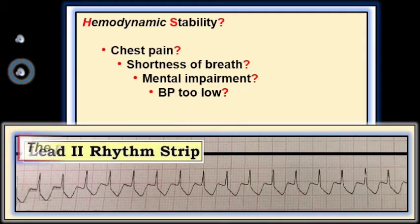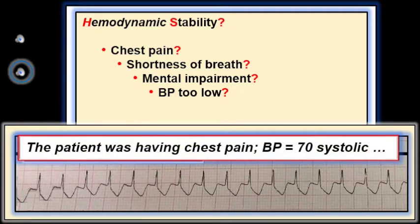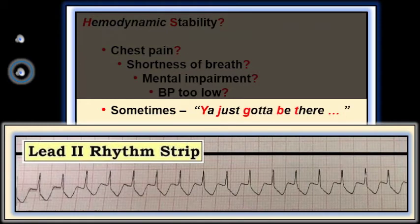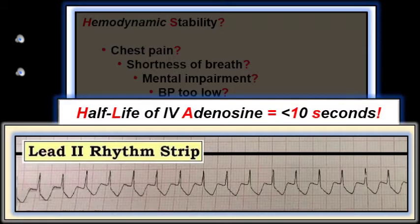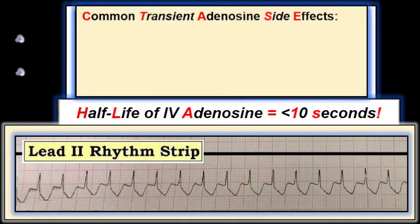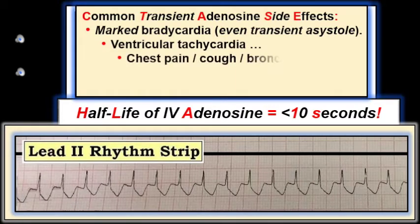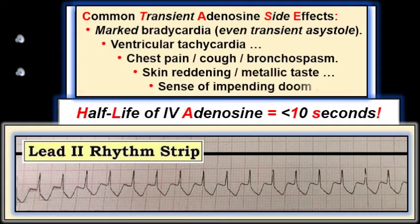On paper, this patient seems unstable. He was having chest pain and his blood pressure was 70 systolic. That said, sometimes you just got to be there. Not all of our patients read the textbook prior to having their infarct or arrhythmia. So although we can second-guess the decision to use adenosine rather than immediately cardioverting the patient in this case, there's nothing like success. Adenosine worked, and following administration of this drug, the patient converted to sinus rhythm. The ultra-short half-life of adenosine — less than 10 seconds — is a major reason why most patients tolerate this drug, even though you may see some major rate slowing and other adverse effects for the first 30 to 40 seconds after giving adenosine.